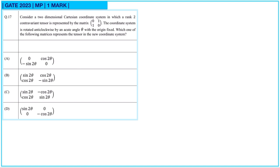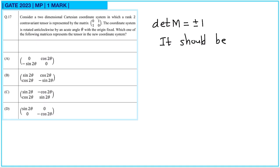It will be a rotation matrix if the determinant of M is equal to plus or minus 1 and it should be symmetric. In each matrix we will check it. So the first one is not symmetric.